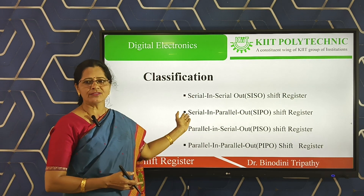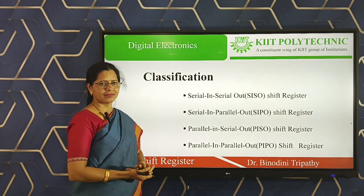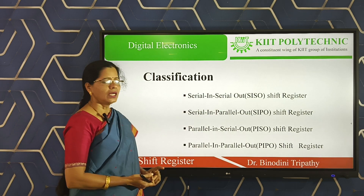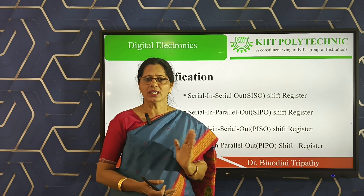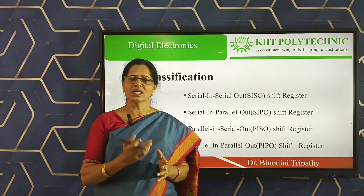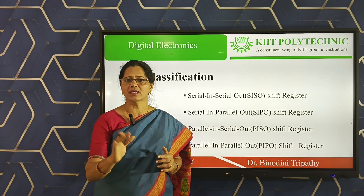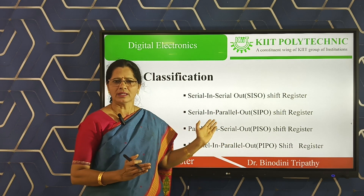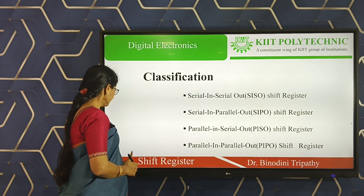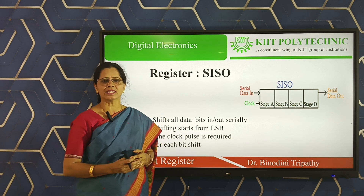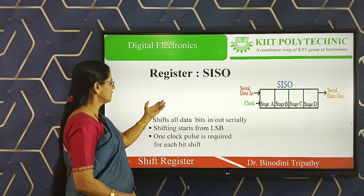Next, let us consider the different types of registers. Shift registers are classified into four classes. One is known as Serial In Serial Out — SISO. Another is Serial In Parallel Out — SIPO. Third is Parallel In Serial Out — PISO. The fourth is Parallel In Parallel Out — PIPO. There is no strict rule for the order, but the designation should be correct. We need to know the basic meaning and difference among these four types.